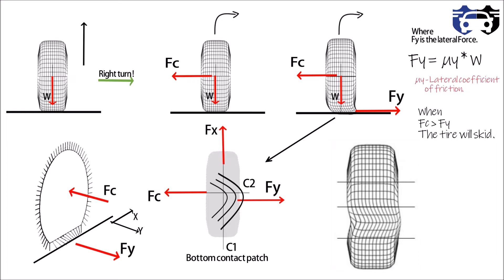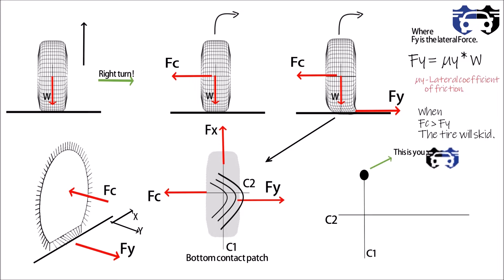Suppose you are sitting on the tread shown by black dot and currently you are in the undeformed region. Now as the tire rolls, you hit the contact patch which is acted by the force Fx in the forward direction and the lateral force Fy in the right direction.